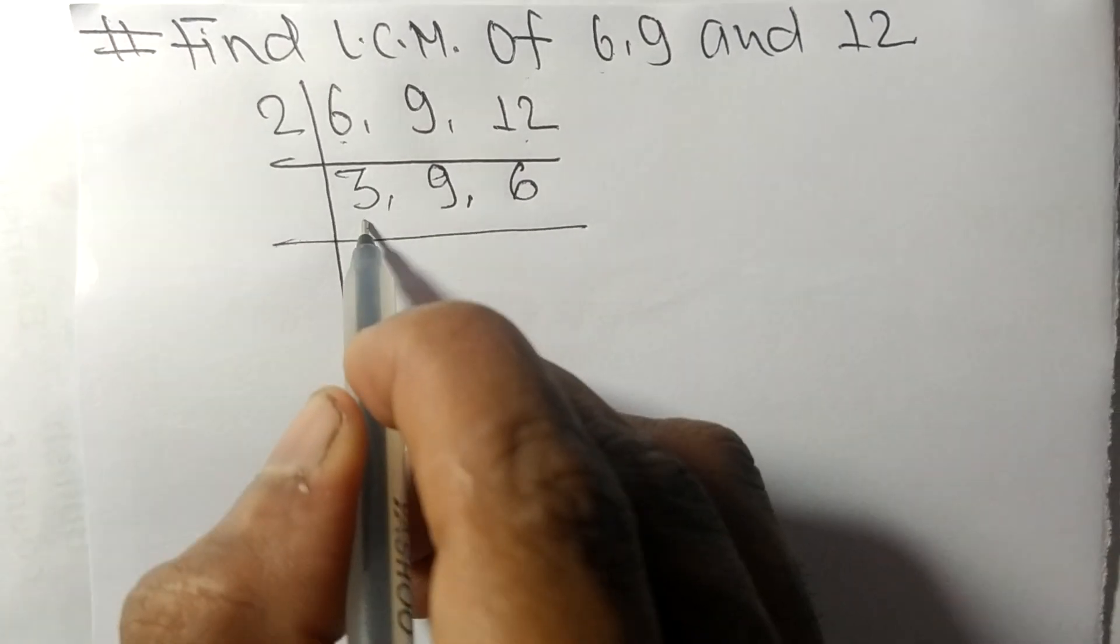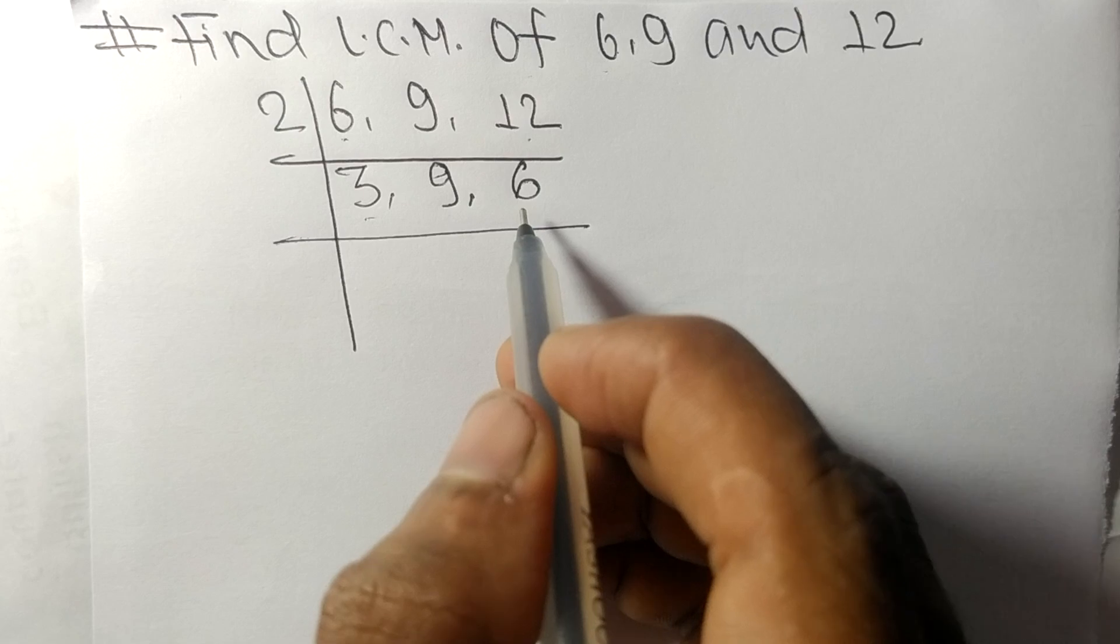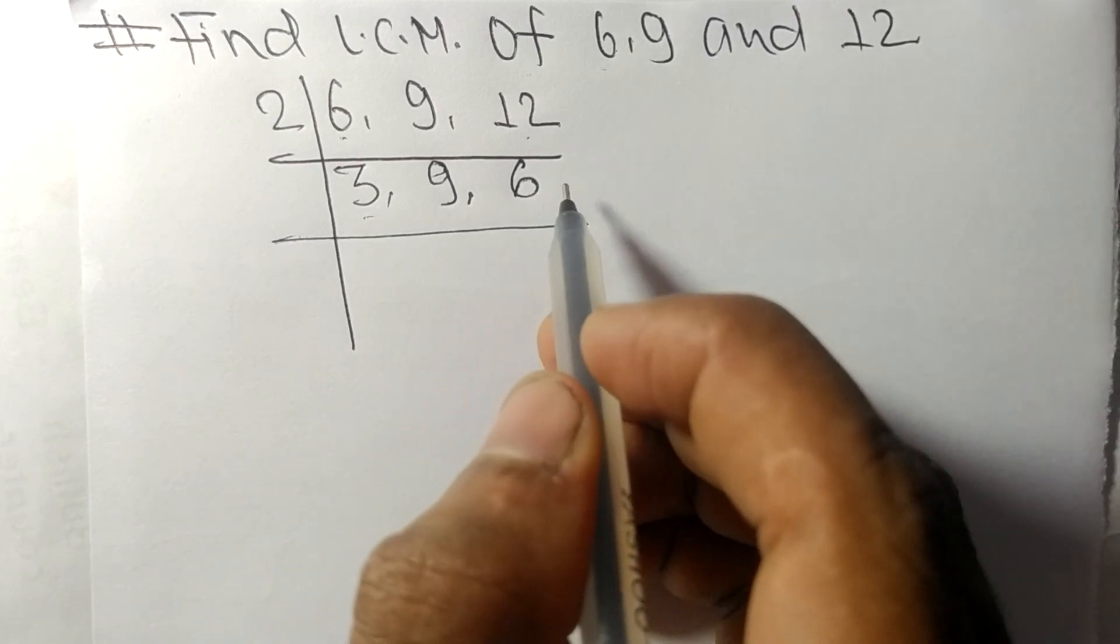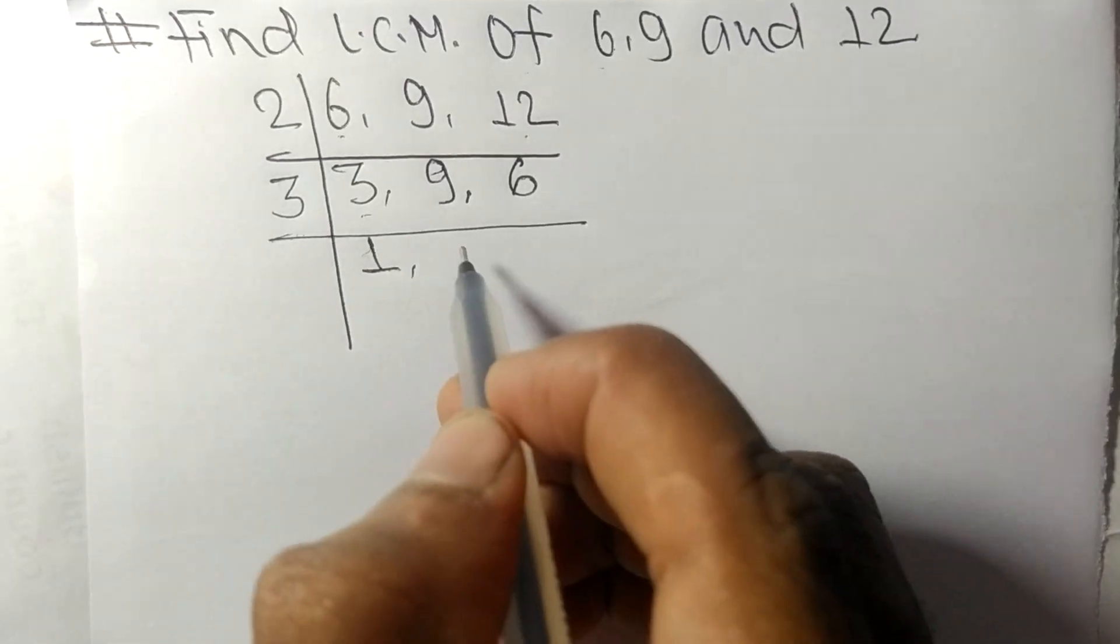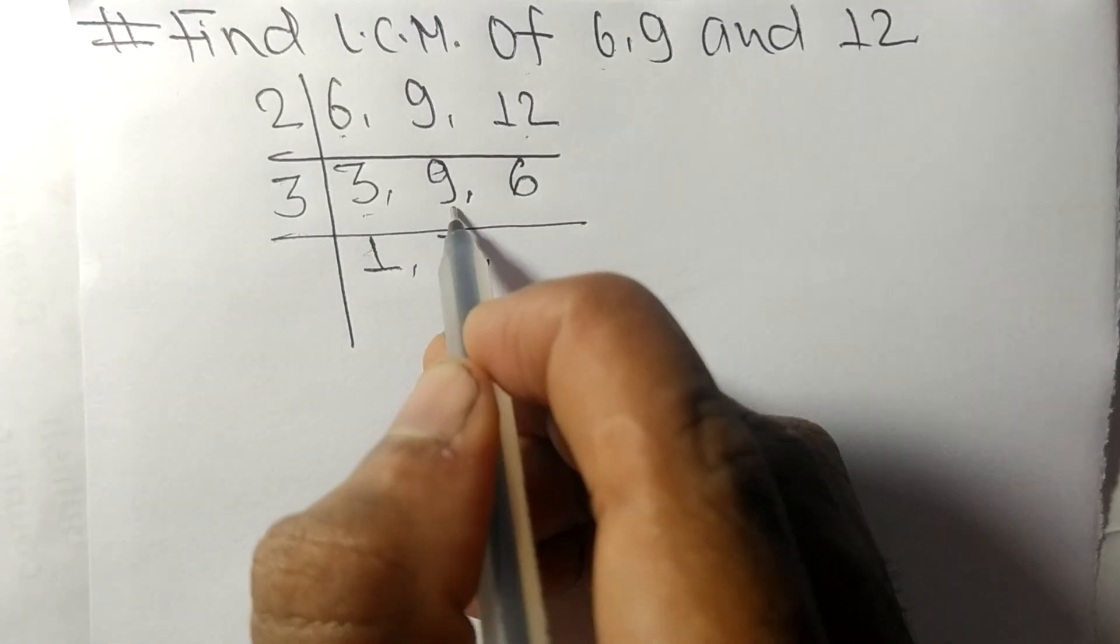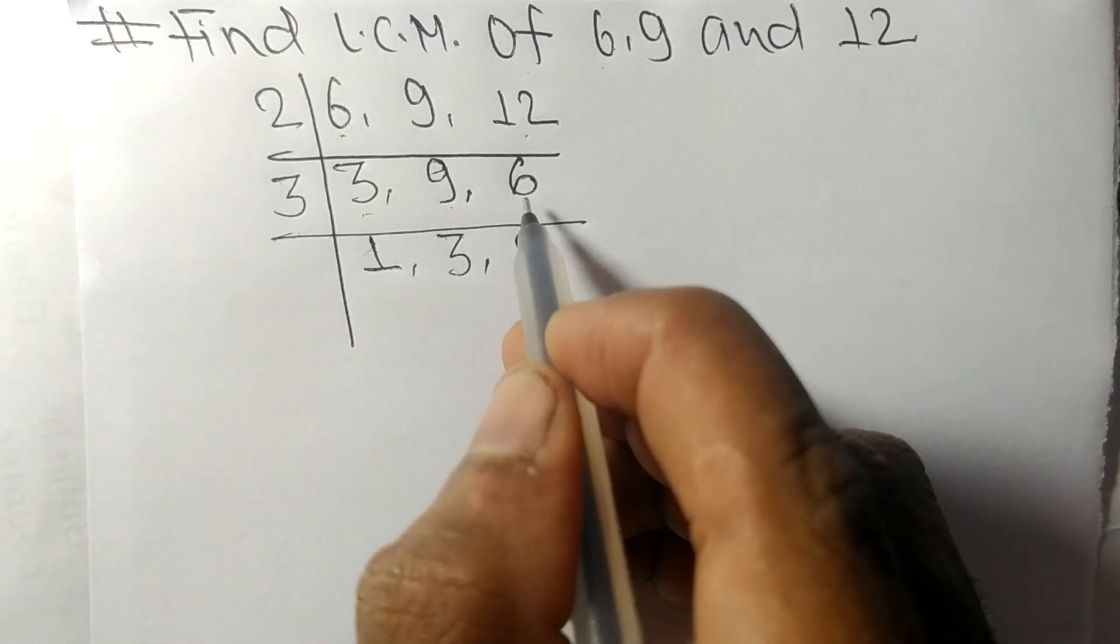Now we got 3, 9 and 6 and these all are exactly divisible by 3. 3 times 1 means 3, 3 times 3 means 9, 3 times 2 means 6.